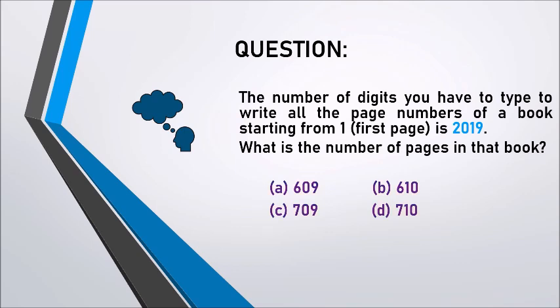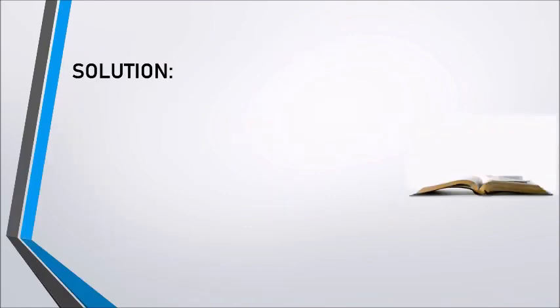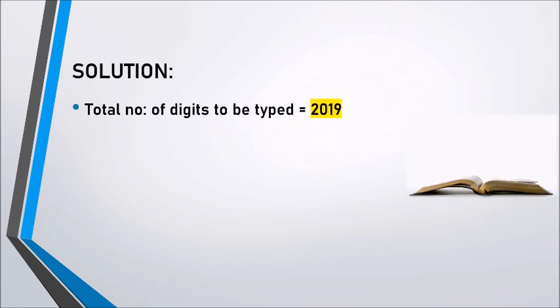Let us see how the solution works. The total number of digits to be typed is equal to 2019. First, let us consider the case of one-digit page numbers.